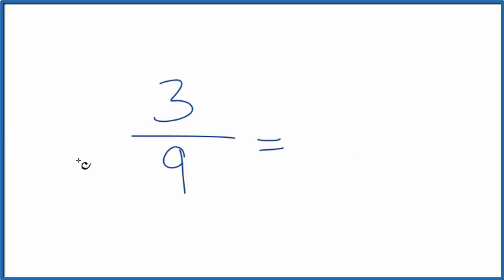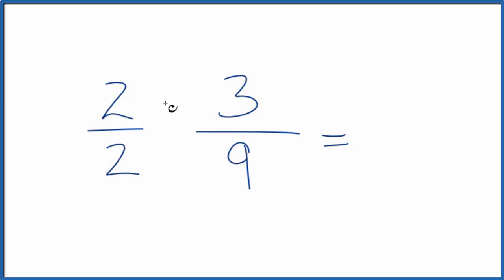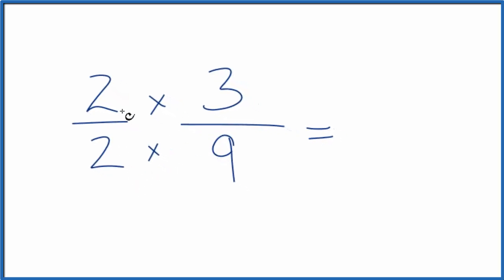We could multiply by 1, but instead of 1, let's call it 2 over 2, because 2 over 2, that's still 1. 2 divided by 2 is 1. But now 2 times 3 gives us 6, 2 times 9, that gives us 18.